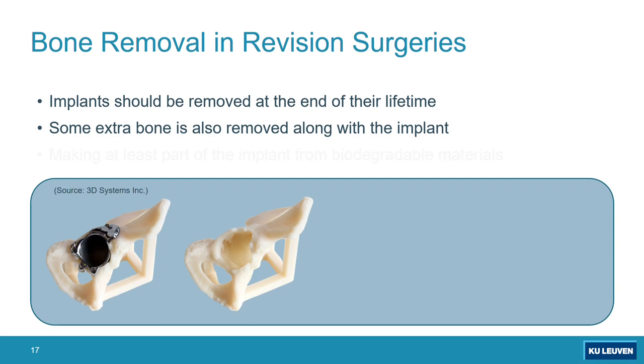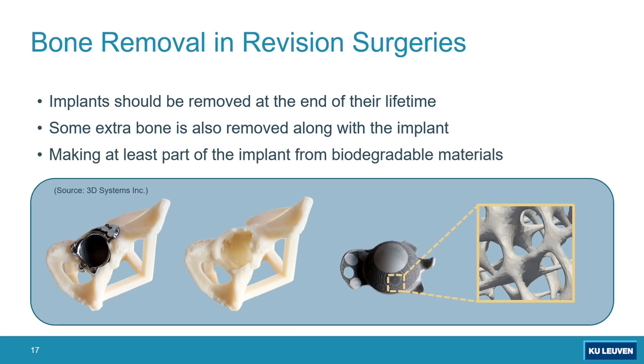The solution to this can be making at least part of the implant from biodegradable materials, because these kinds of implants are not made of magnesium or iron, they are usually titanium. But we can have at least part of it from biodegradable materials, so when the tissue grows and bone grows and heals, they disappear and get absorbed.